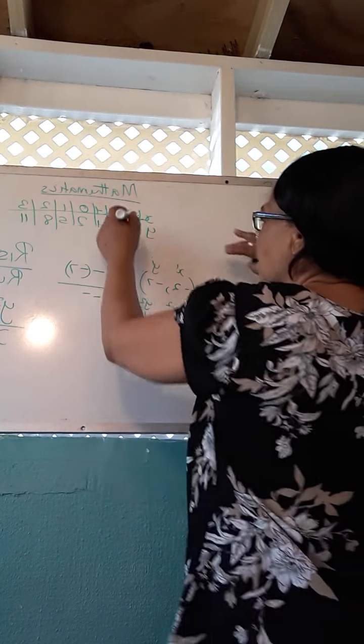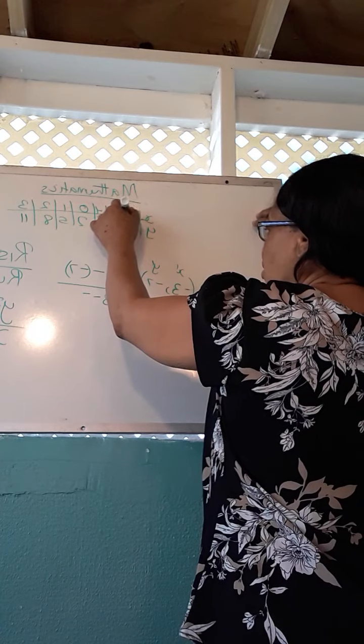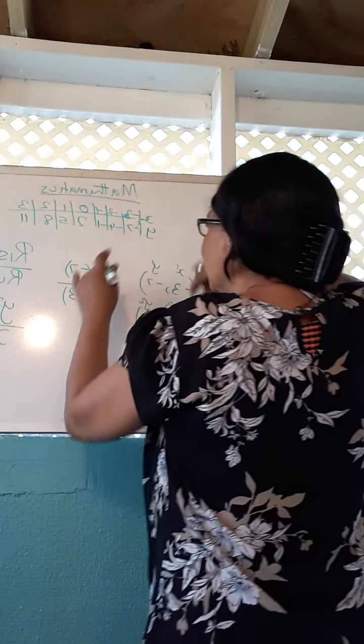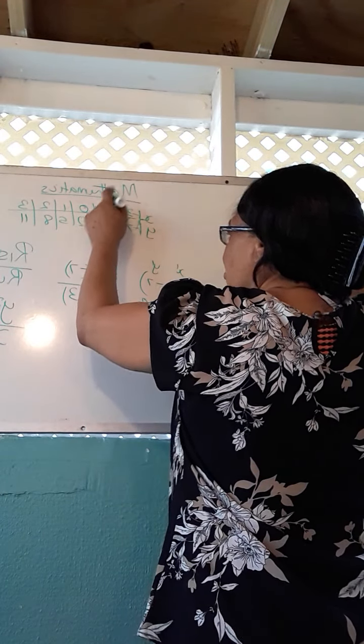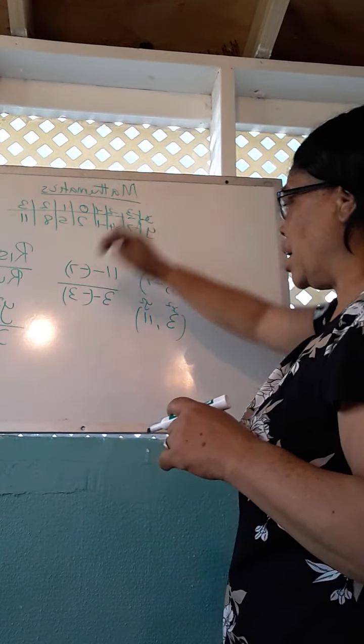3 minus minus, this is 3. This first value was 3, not a 2. Sorry, that's a 3. 3 minus minus 3. As I said, it's important. This point right here was a negative 3, not a negative 2. So it is going to be 3 minus minus 3.